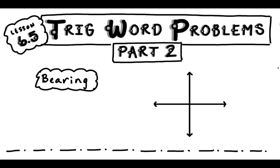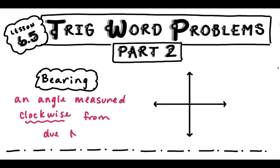A bearing is just an angle that's measured clockwise from due north. So clockwise is important, from due north.